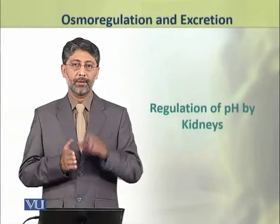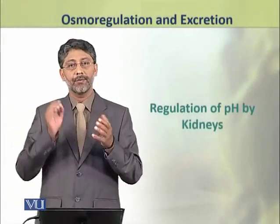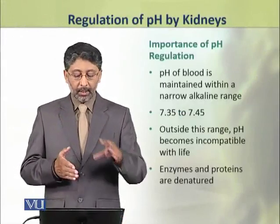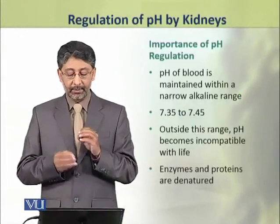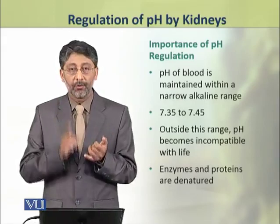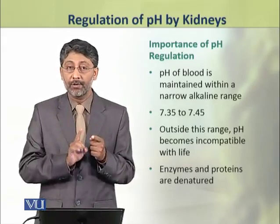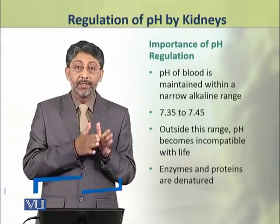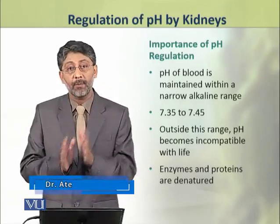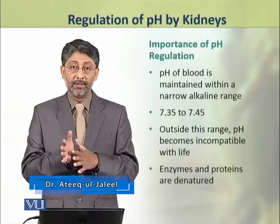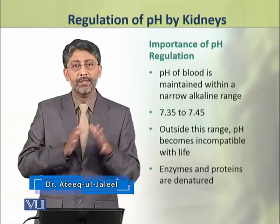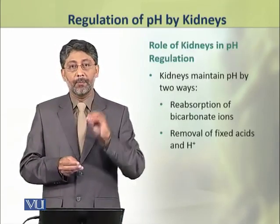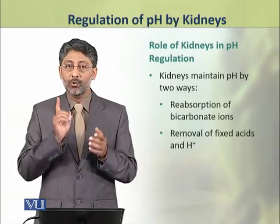Dear students, in this topic we shall discuss the regulation of pH by the kidneys. The pH of blood is maintained within a narrow alkaline range of 7.35 to 7.45. Outside this range, pH becomes incompatible with life because it denatures enzymes and proteins. Kidneys maintain pH by two ways.